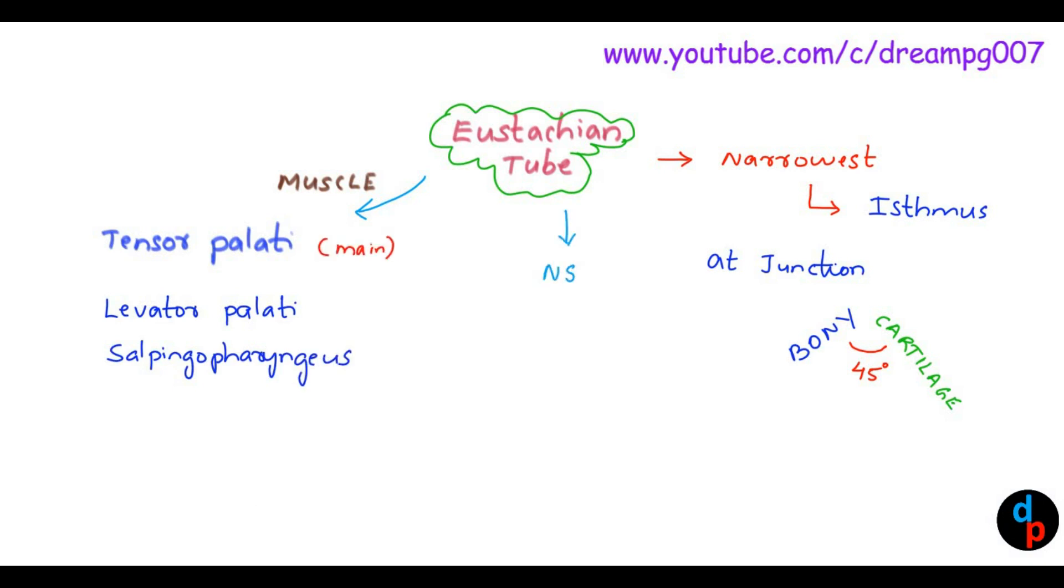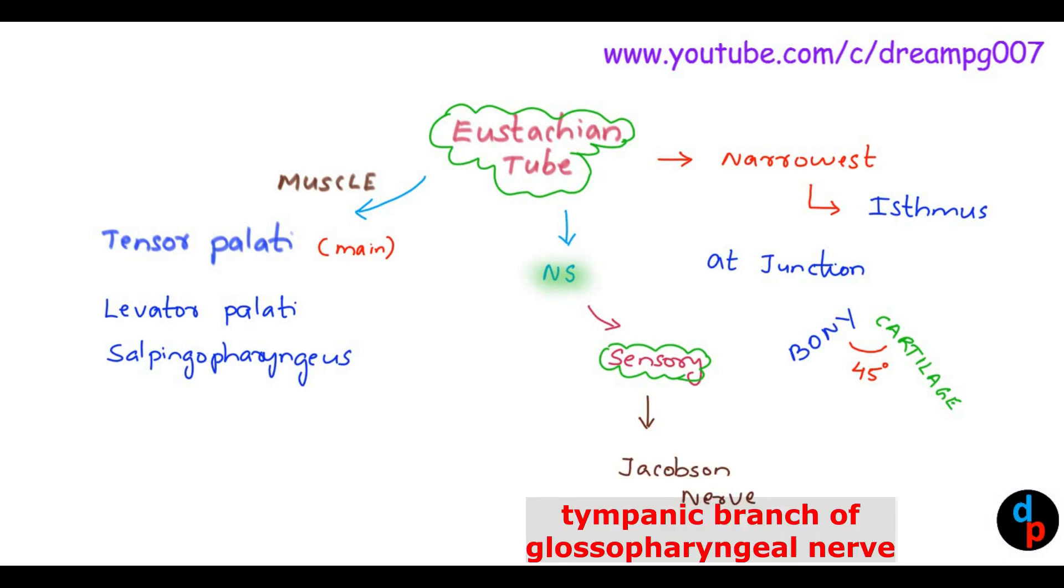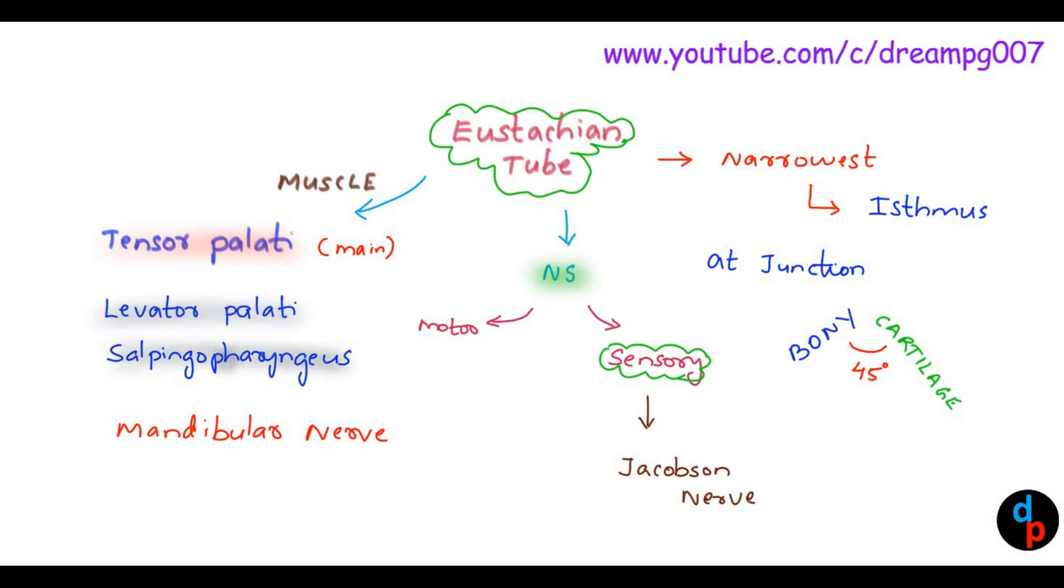Now let's have a look into the nerve supply of Eustachian tube. The sensory part of the Eustachian tube is supplied by Jacobson nerve. Motor parts supply the muscle. Tensor palati is supplied by the mandibular nerve, whereas the levator palati and salpingopharyngeus is supplied by the cranial accessory through the vagus.